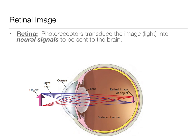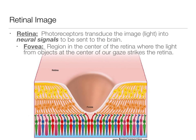It takes that light and transduces it into neural signals in the brain. That little dip section in the retina is our fovea — the center of the retina where, when we're focusing on something, the image is being placed. We are foveating on it.